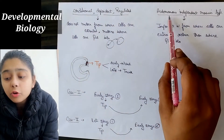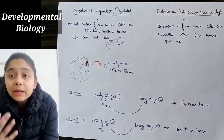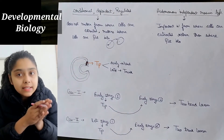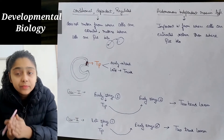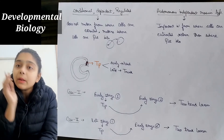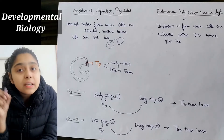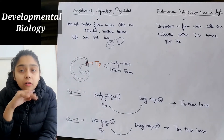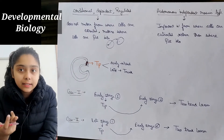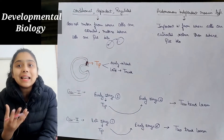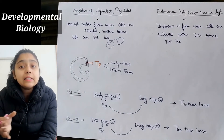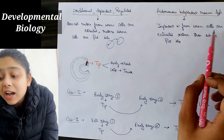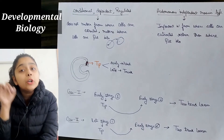The second type are Autonomous Independent Mosaic (AIM) type cells. These cells are specific in their functions. It doesn't matter which environment they are placed in — they will behave according to their own pre-specified function. They are not environment-dependent; they are autonomous and independent. They develop on their own and function in their own way regardless of where they are placed.